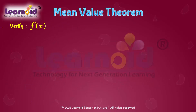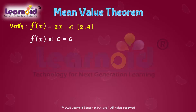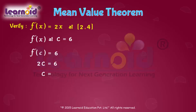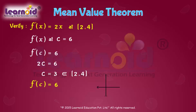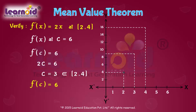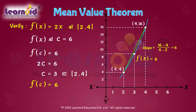Now let us find f'(x). f'(x) = 2x. f'(c) is equal to 6 as per the Mean Value Theorem, so 2c = 6. Thus at c = 3, which belongs to (2, 4), we have f'(c) = 6. The slope at point c = 3 is the same as the slope of the line joining (2, 4) and (4, 16).